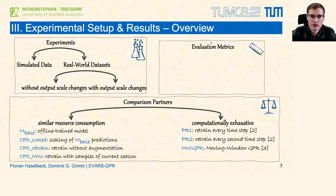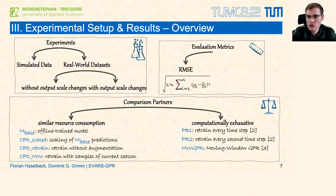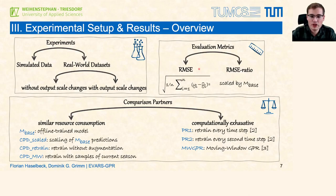To compare the results we use two evaluation metrics. First the root mean squared error, or RMSE, which is a very common metric for regression tasks. However, RMSE is scale dependent, so we also included RMSE ratio. For RMSE ratio we set the RMSE performance of a specific method in relation to the performance achieved with MBASE. This enables us to compare the results of simulated scenarios which are on a different scale.